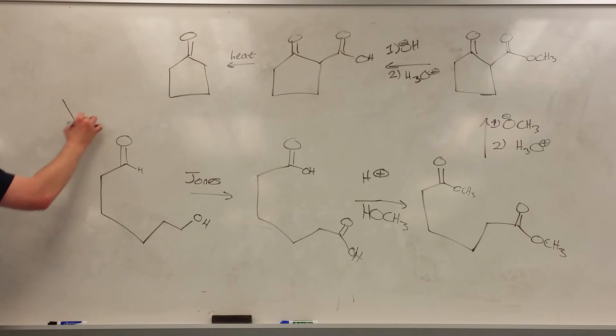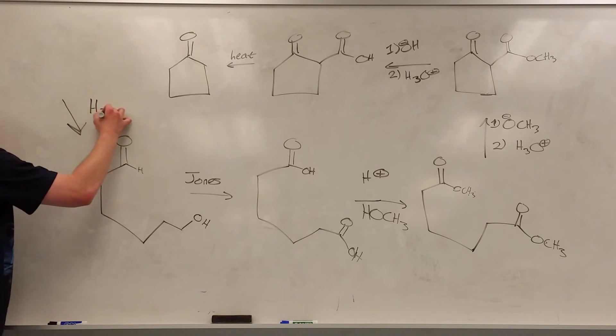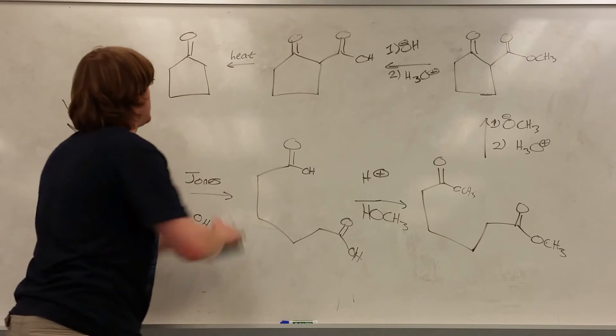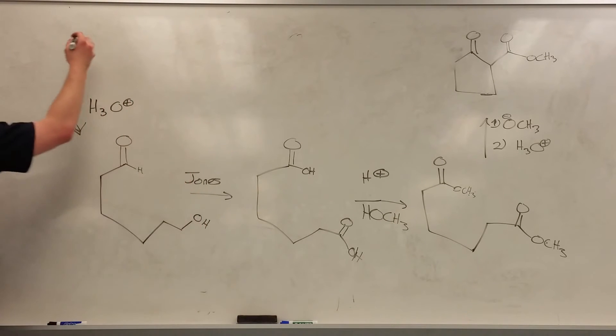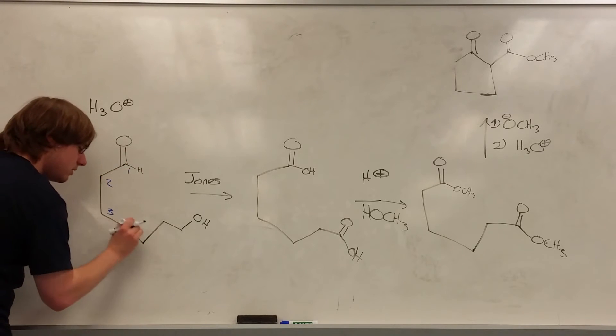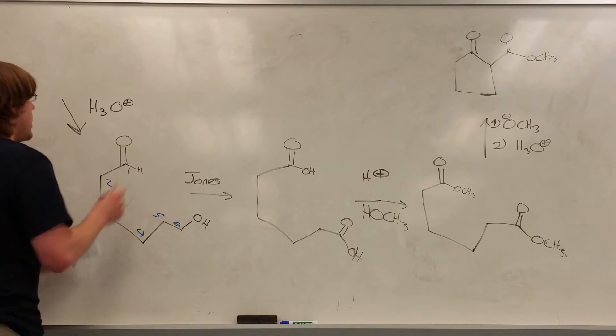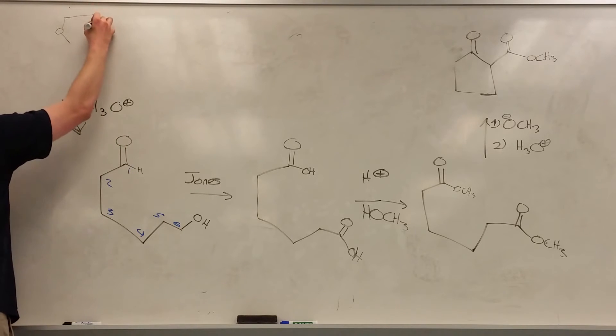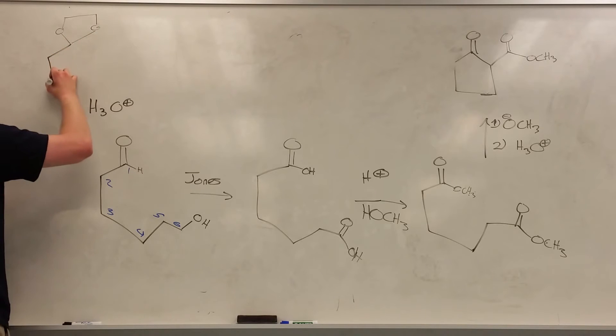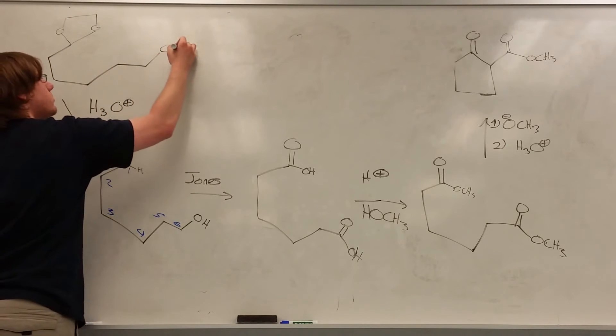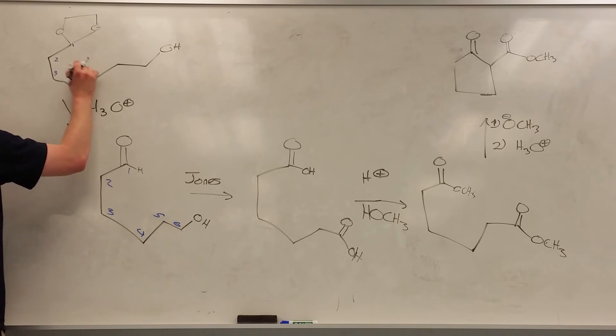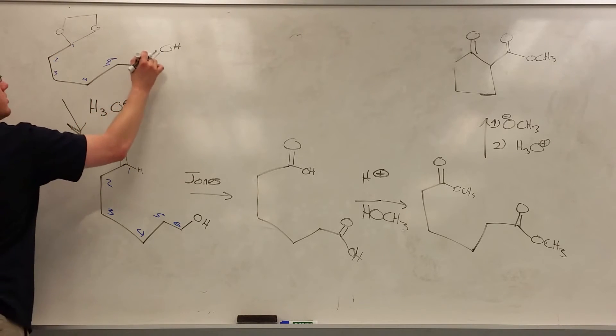So now I want to put that protecting group on, and I'm going backwards. I'm going from something with the protecting group to something without, which means I remove the protecting group going forward. Remove the protecting group by using H3O positive. And so I want to protect this carbonyl, so let's number these so I don't lose track of them. Six carbons all together, and carbon one will have the protecting group on it now. One, two, three, four, five, six OH. One, two, three, four, five, and six.